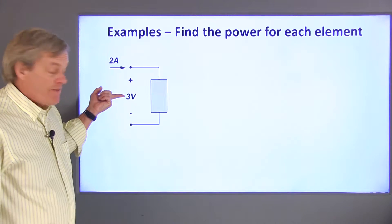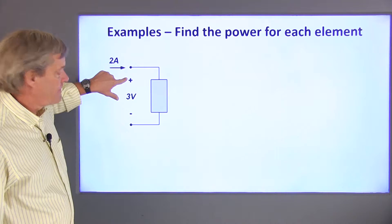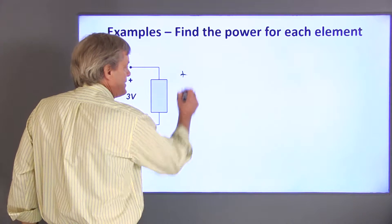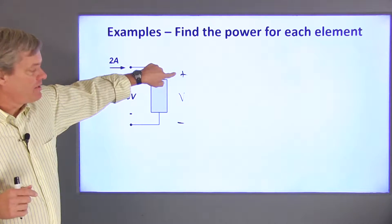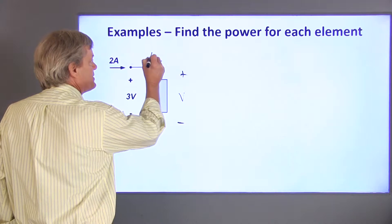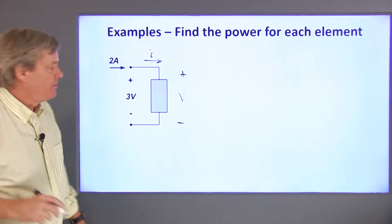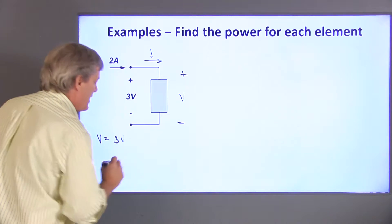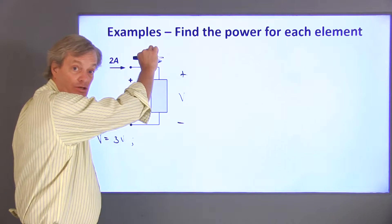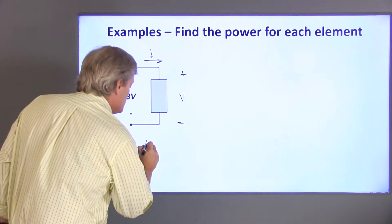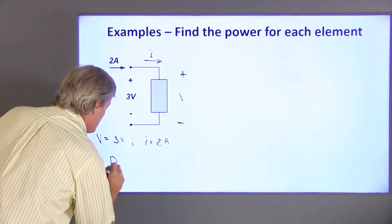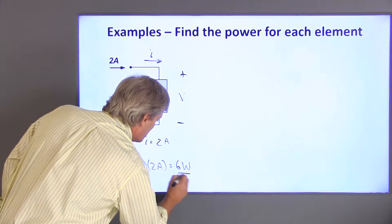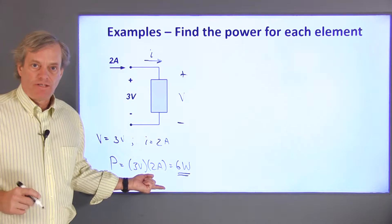For the first example, we have positive 3 volts across this element with this being the higher voltage. Two amps are entering the top terminal. I choose a passive sign convention — say I choose my positive voltage terminal to be up here. That means positive current has to be entering the positive voltage terminal. This assumed polarity is the same as the actual polarity, so that voltage is positive 3 volts. Likewise, this assumed current direction is the same as the actual direction, so I is equal to positive 2 amps, and the power is 3 volts times 2 amps, which is 6 watts. So this element is absorbing 6 watts of electrical energy.